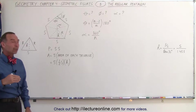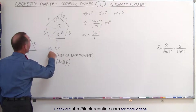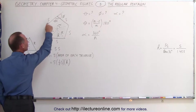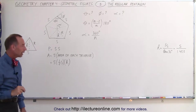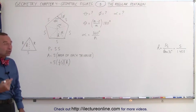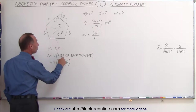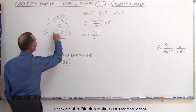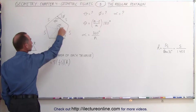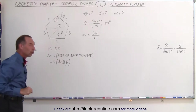To find the perimeter of a regular pentagon is straightforward: it's simply five times the length of each side, since all sides are equal. To find the area, the best approach is to say the area equals five times the area of each of the five triangles. So if you find the area of one triangle and multiply by five, you get the total area.